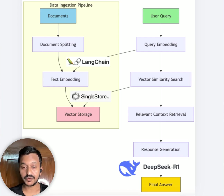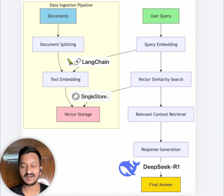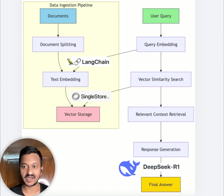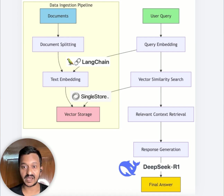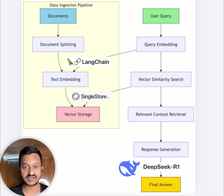I'm also going to show you how to get the DeepSeek API key from NVIDIA. Because it looks like it's very hard to get the DeepSeek API key directly - a lot of people are trying it out and the server has been busy for many days. So I'm going to show you how to get the DeepSeek API key from NVIDIA and then we can see how this RAG system works.